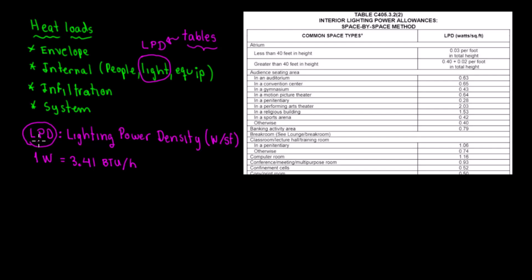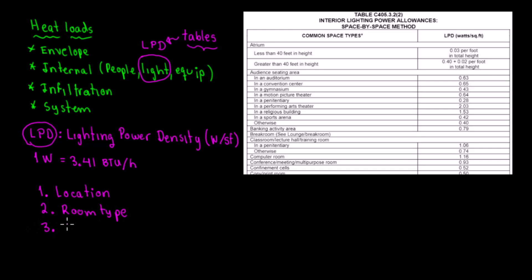To find the LPD — Lighting Power Density — step one: you need the location. Step two: you need the room type. Step three: you need the square footage, the surface area of the building.